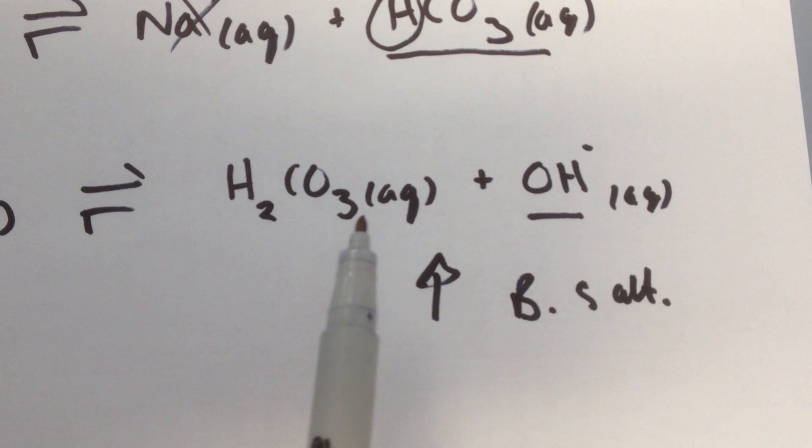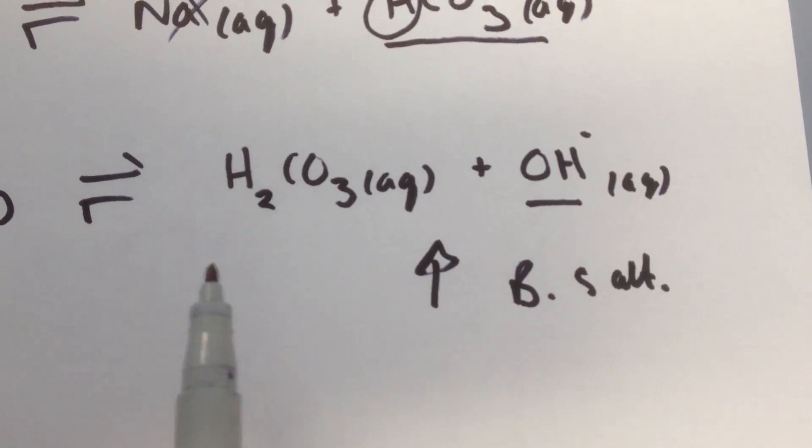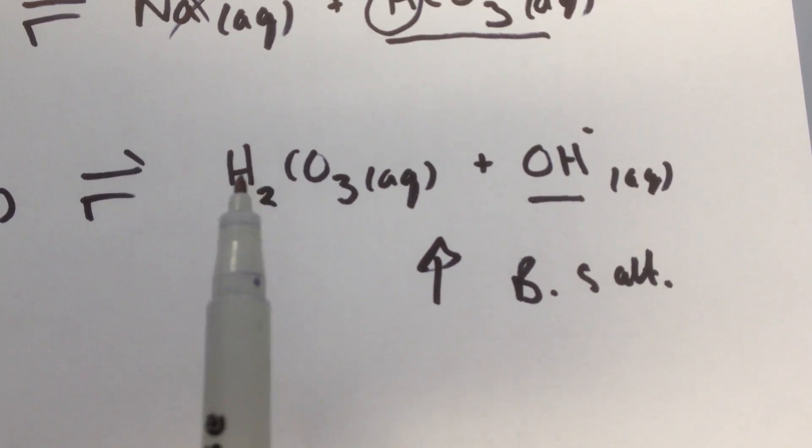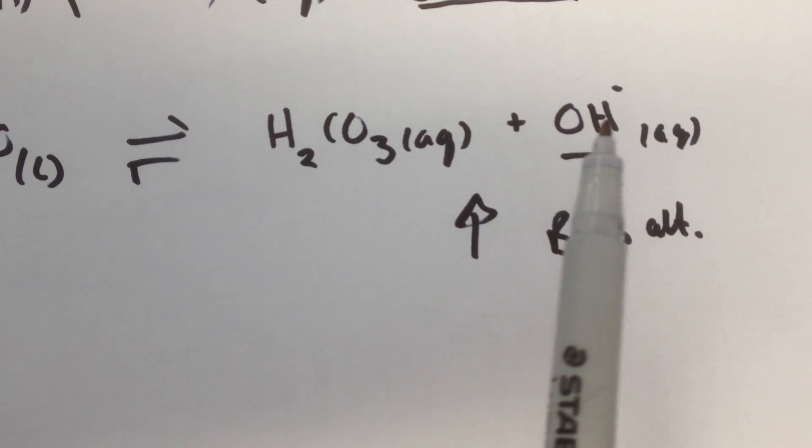the conjugate base of the weak acid carbonic acid, has been forced to take back one hydrogen and two hydrogens, meaning that those hydrogens could only have come from the water molecule and leave behind OH⁻.